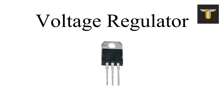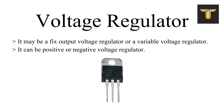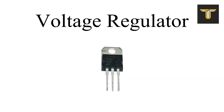A voltage regulator is a three-terminal component that is designed for specific voltage output levels. It may be a fixed output voltage regulator or a variable voltage regulator, and it can be positive or negative. A fixed output voltage regulator gives a fixed output voltage level. For example, the 7805 voltage regulator shown here is a positive regulator, and 05 represents its 5V output level.